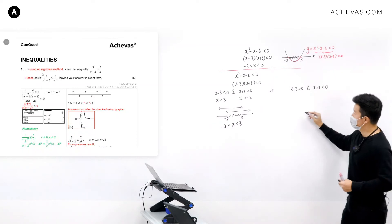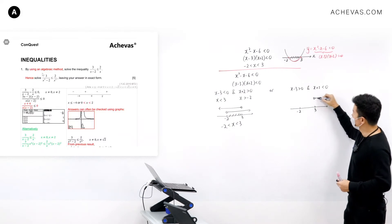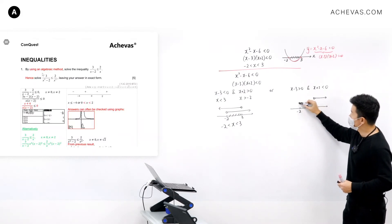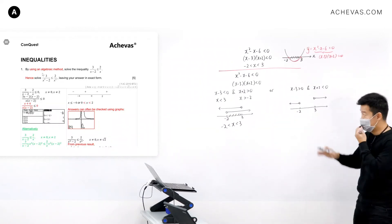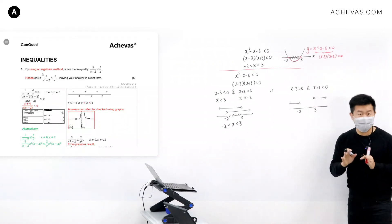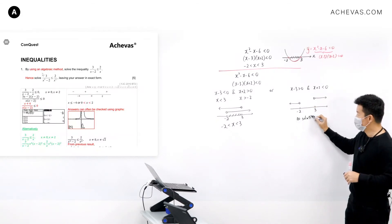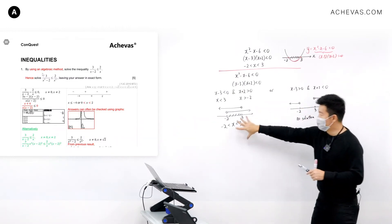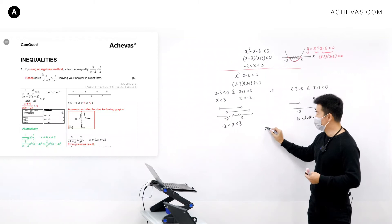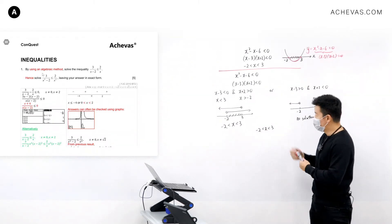For Case 2, I need a number that is bigger than three and less than minus two at the same time. Drawing the number line, I can see there is no such number — so this case gives no solution. My overall solution is therefore when x is between minus two and three, which matches the graphical result.